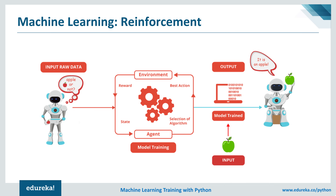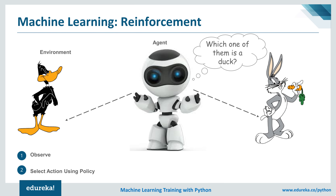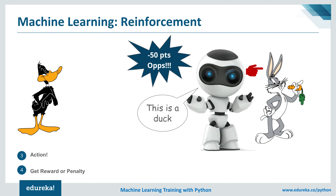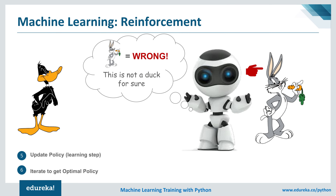In this image, the machine is initially confused about whether something is an apple or not. Using reinforcement learning, if it makes a correct decision it gets reward points, and if it makes a wrong decision it gets a penalty. Once training is done, the machine can easily identify which one is an apple. In another example, an agent must judge from the environment which of two animals is a duck. The agent observes the environment and selects an action using a policy. If it wrongly chooses a bunny as a duck, it gets a penalty — for example, minus 50 points. The machine then updates its policy, and this continues until the machine gets an optimal policy, after which it knows a bunny is not a duck.